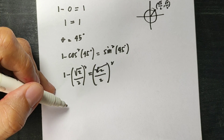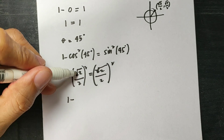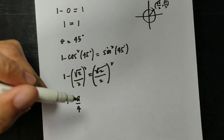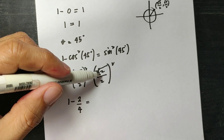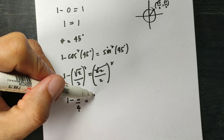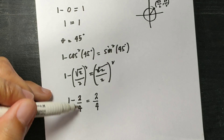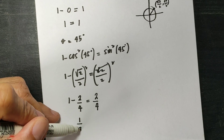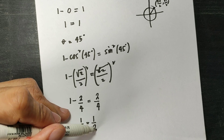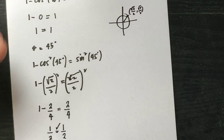Simplifying: squaring square root of 2 over 2 gives 2 over 4, which is 1 half. So 1 minus 1 half is 1 half, equal to 2 over 4 which is also 1 half. They are equal.